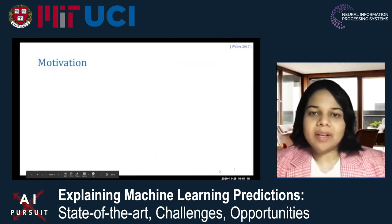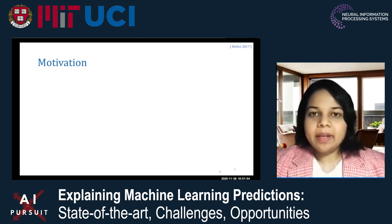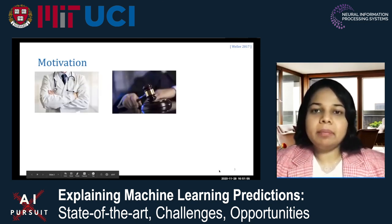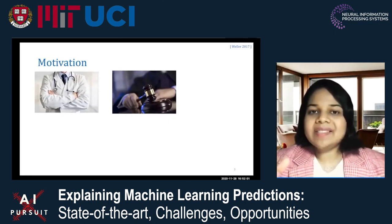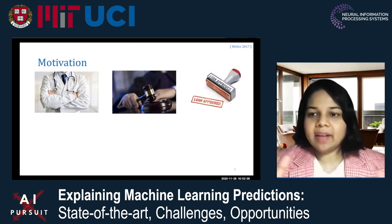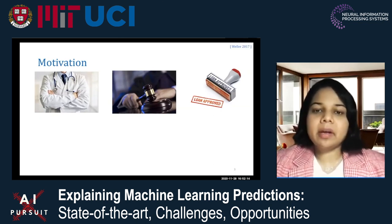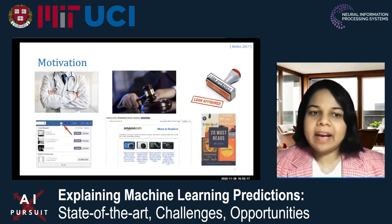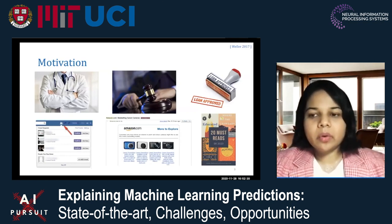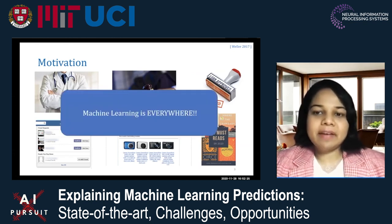Machine learning models are being increasingly employed in a variety of real-world settings. For example, machine learning models are being used to assist decision makers like doctors and judges in domains like criminal justice and healthcare. They're also being used to determine which applicants get their loans approved. In addition, machine learning models are powering recommender systems across a variety of popular platforms, including Facebook, Amazon, Goodreads, and many more. So basically, machine learning is everywhere today.